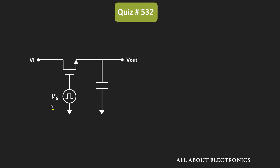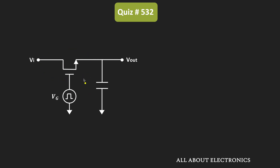The given circuit is the sampler and hold circuit, and this MOSFET is used as a switch. That means whenever this MOSFET is in the ON condition, it will act as a closed switch, and at that time this sampler and hold will operate in the sample mode.